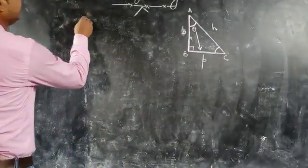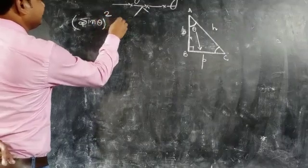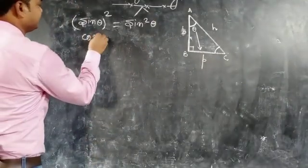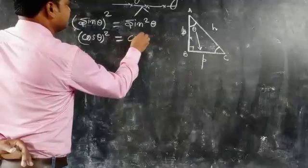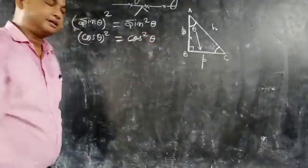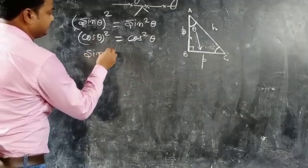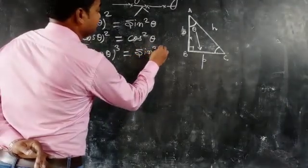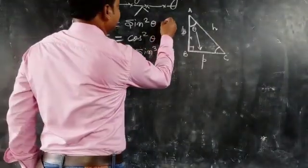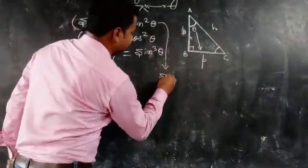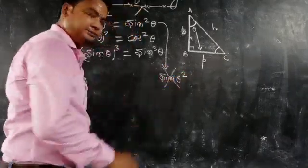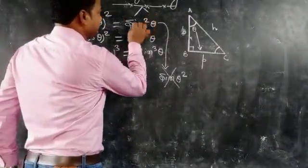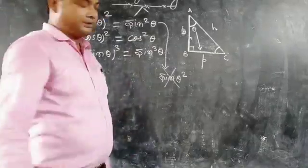Note on notation: sine theta whole square is written as sin²θ, and cosine theta whole square is written as cos²θ. Similarly, sine theta whole cube is written as sin³θ. Be careful — the square or cube exponent is placed in the middle, between 'sin' and 'theta'. So sin²θ means (sin θ)².